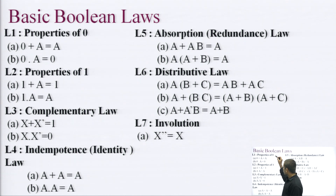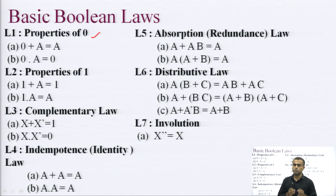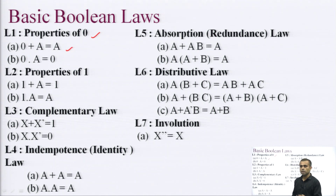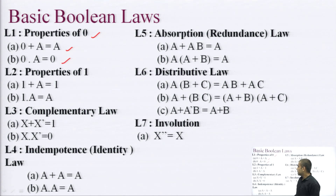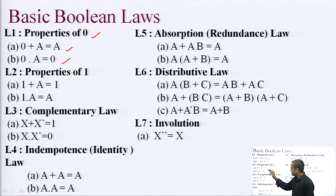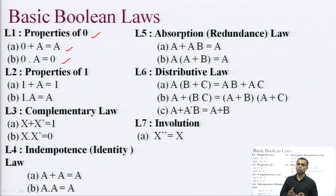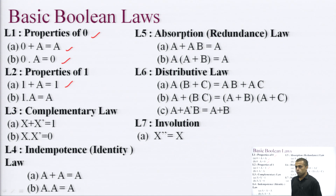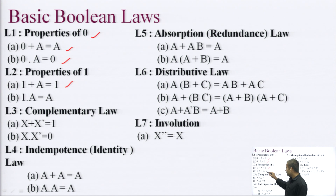Starting with the properties of 0: 0 plus A equals A, meaning if 0 is added to any variable it remains unaffected. Also, 0 multiplied by any variable gives 0, so 0 into A is 0. Then properties of 1: 1 plus A equals 1, because whether A is 0 or 1, the result is always 1. And 1 into A equals A, meaning any variable multiplied by 1 remains unaffected.